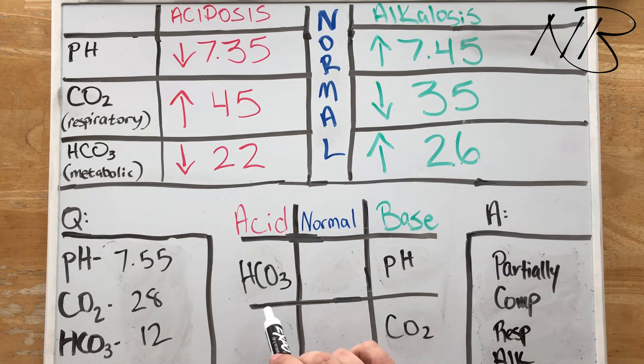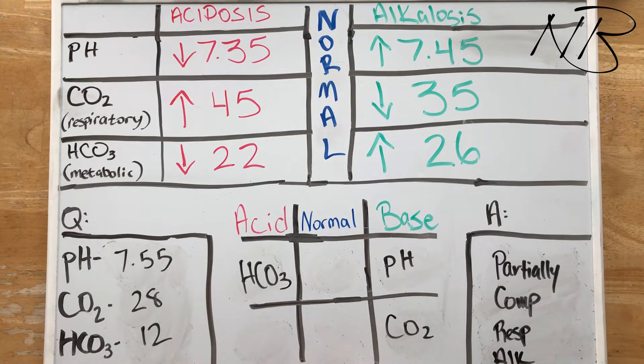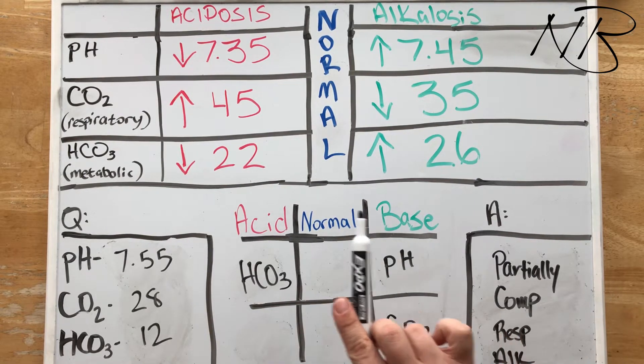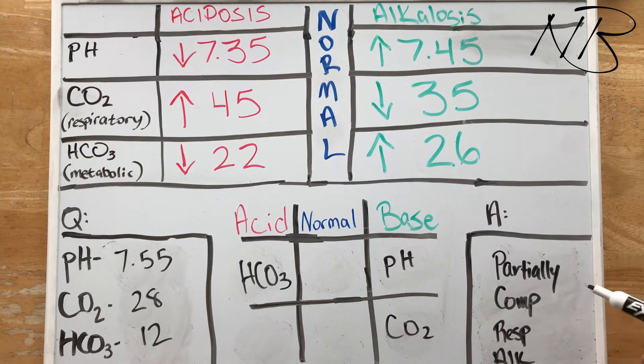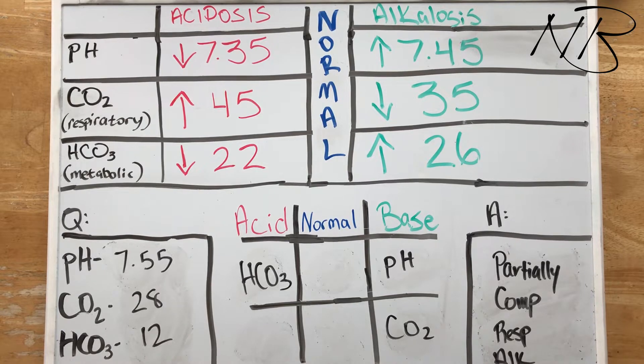And so what do we have? We know that we have respiratory alkalosis and we can see that our kidneys are trying to compensate. Hence why our bicarbonate fell in the opposite column from where our pH and our CO2 are. So here we have partially compensated respiratory alkalosis.